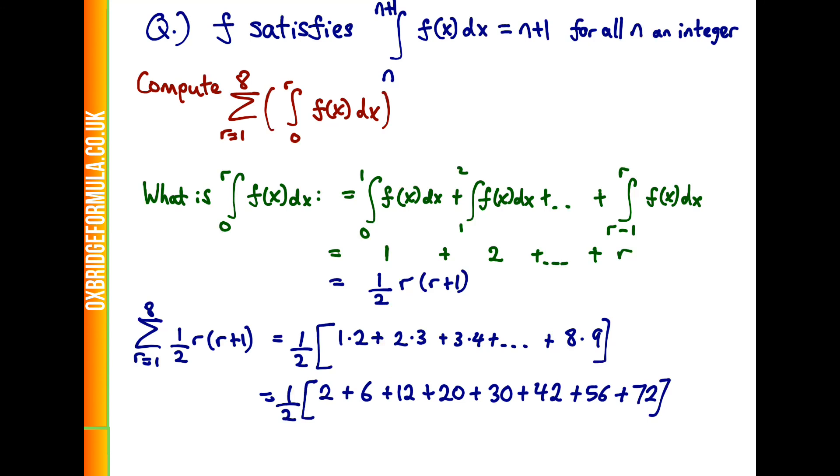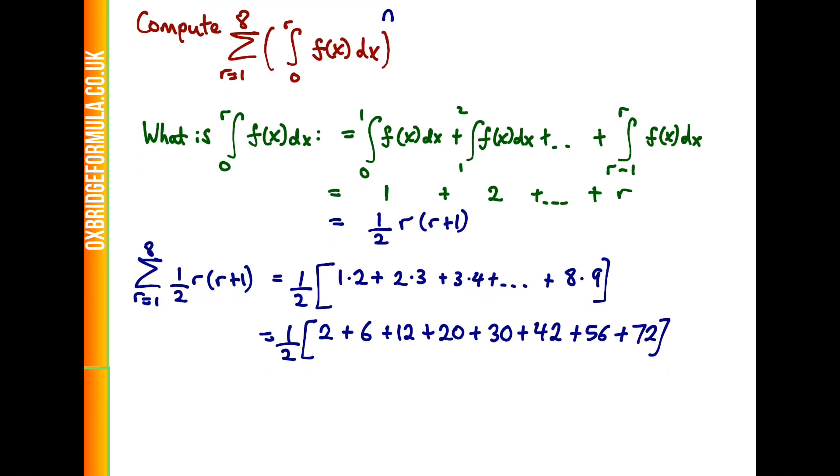Simplifying this, we get half times 2 plus 6 plus 12 all the way up to plus 72, and then simplifying this down again gives us exactly 120. So the answer is C.